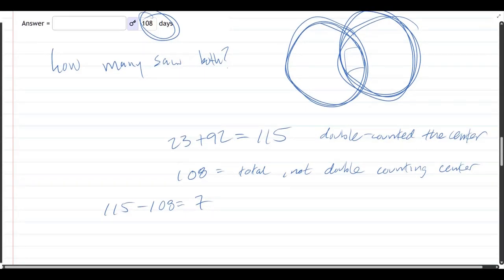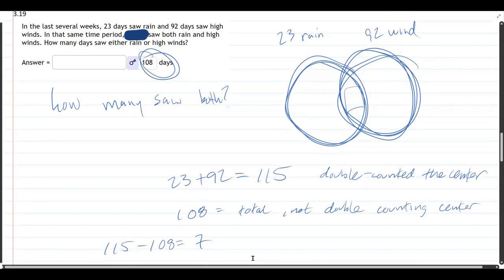What formula is this using? The number in R union W equals the number in R plus the number in W, which we did here, minus the intersection.